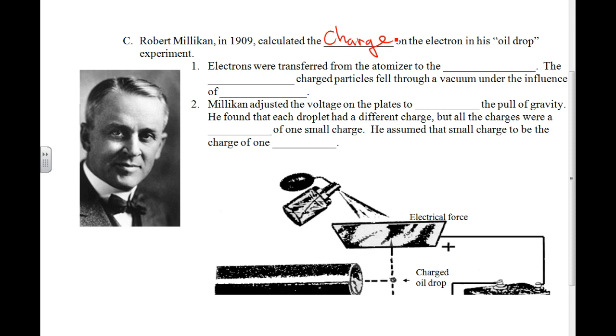So just go with me here, and I will try and explain what on earth he was doing. First off, electrons were transferred from the atomizer. That's this device. Atomizer just means it turned something into a fine mist.